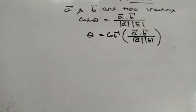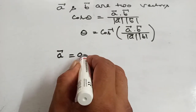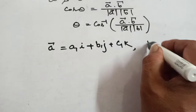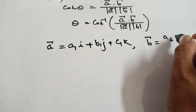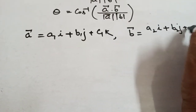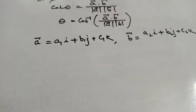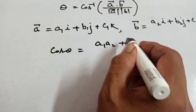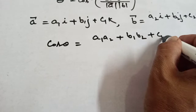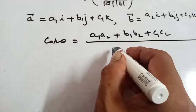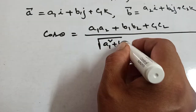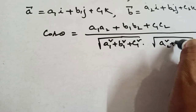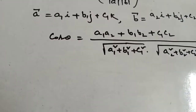Another way: suppose a is a vector equal to a1i plus b1j plus c1k, and b is another vector equal to a2i plus b2j plus c2k. Then you can write the formula: cos theta equals a1·a2 plus b1·b2 plus c1·c2, divided by root over a1 square plus b1 square plus c1 square. This is another formula.